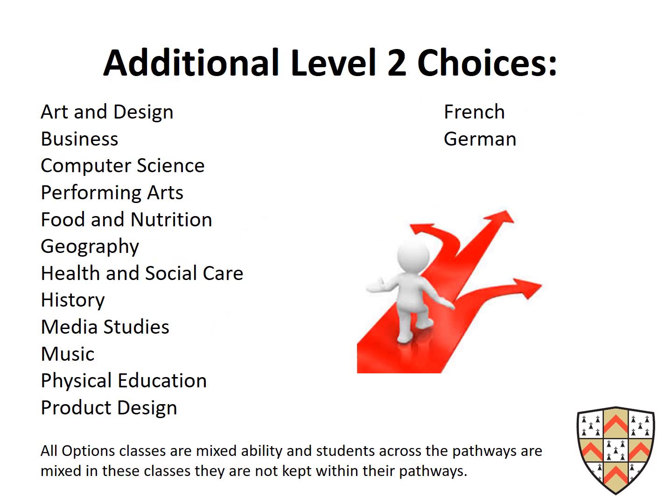Regarding the additional Level 2 option subjects: there are quite a few of them and all the information is on the website, including videos from staff and an options booklet with written details of each GCSE or Level 2 qualification. Students can choose to do two languages if they wish. All option classes are mixed ability and students cross pathways are mixed — for example, students on the I pathway will be in options classes with students on the K pathway.